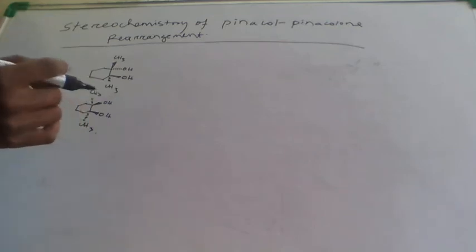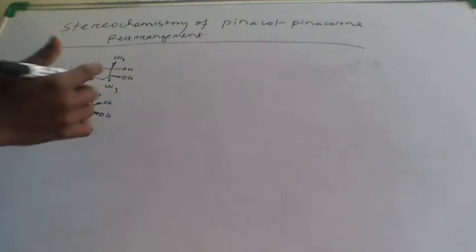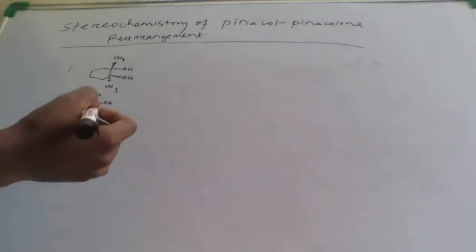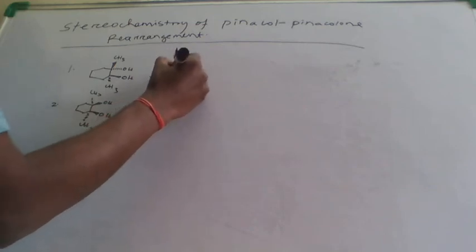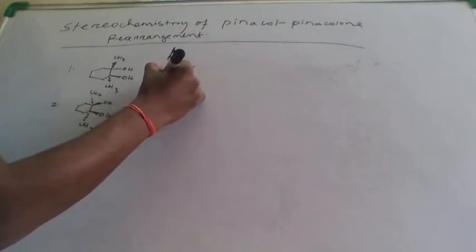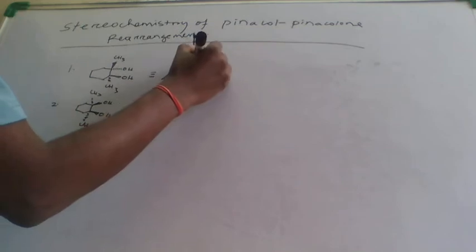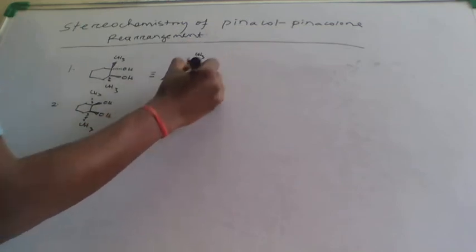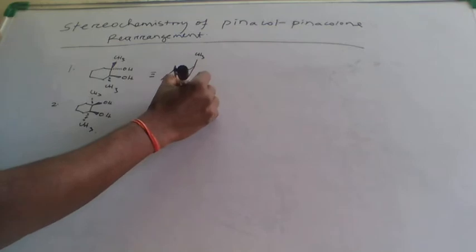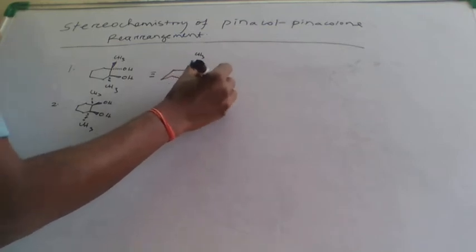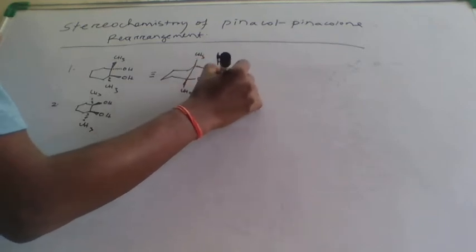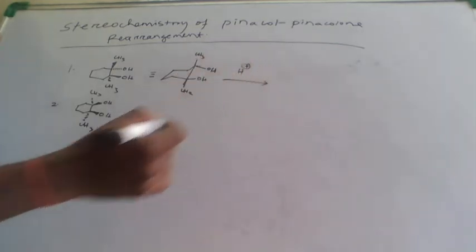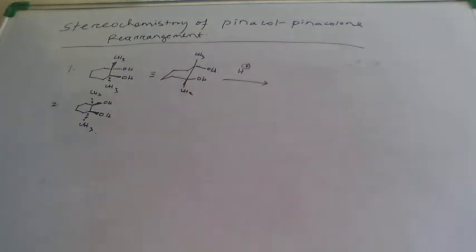In order to know the proper stereochemistry of this pinacol-pinacolone rearrangement, you have to draw the chair form of the cyclohexane ring. Here we identify which groups are above and which are below in the chair conformation.